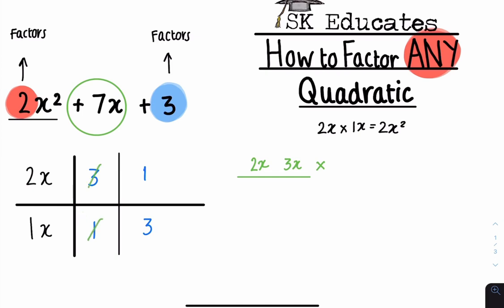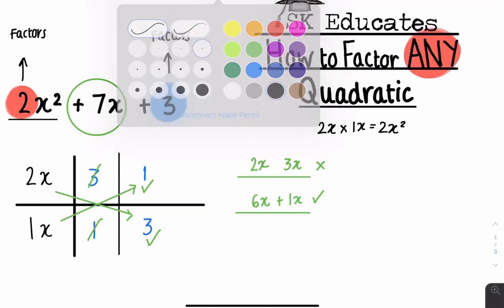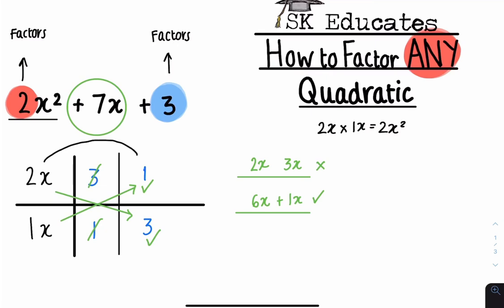Go to the next column. 2x multiplied by 3, which is 6x, and 1x multiplied by 1, which is 1x. Again, can we use these two terms to add or subtract them from each other to make 7x? Yes, we can — we can add them. Therefore, this pair works. Then your final step is to write your two double brackets. So all you have to do is write 2x plus 1 and 1x plus 3. Your answer is 2x plus 1 — 1x is the same as x — so x plus 3.